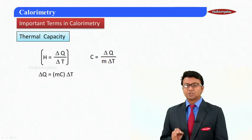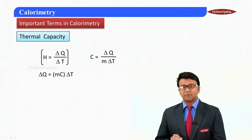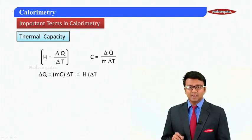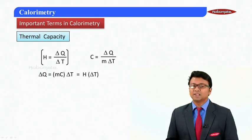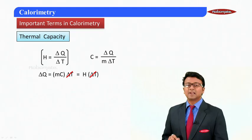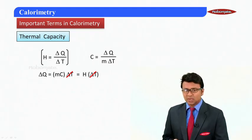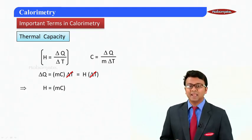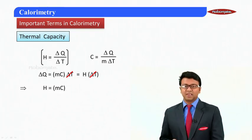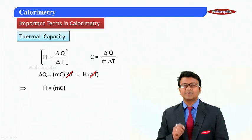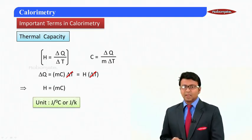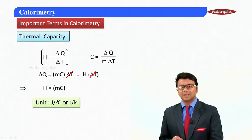If I have the relation here which will give me ΔQ = mC ΔT, hence this can also be written as H × ΔT. So if I cancel the ΔT from both sides of the equation, I get my thermal capacity as the product of mass into specific heat capacity. This is a very important relation to be remembered. The unit of thermal capacity is nothing but joules per degree centigrade or joules per Kelvin.